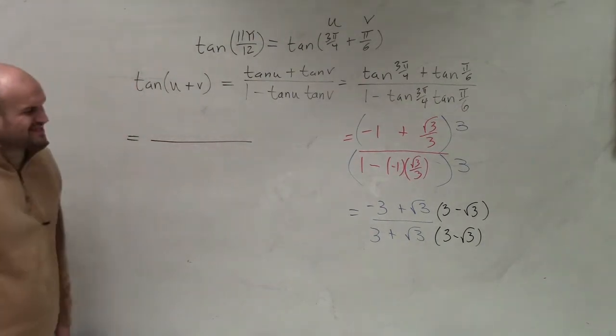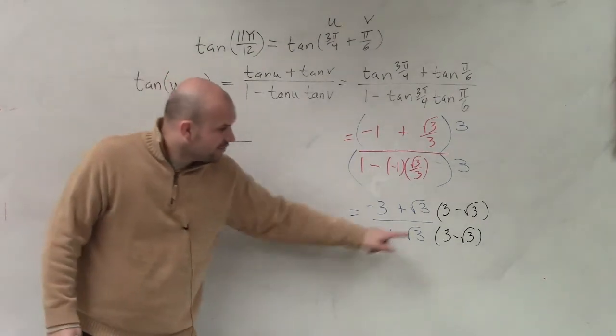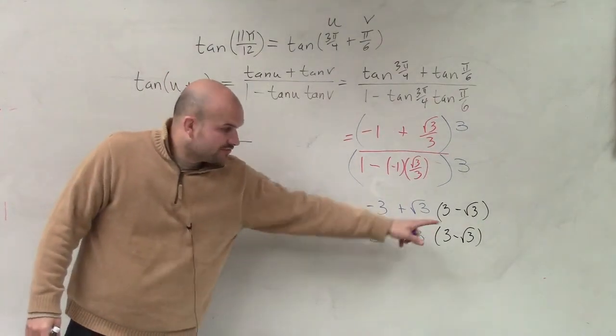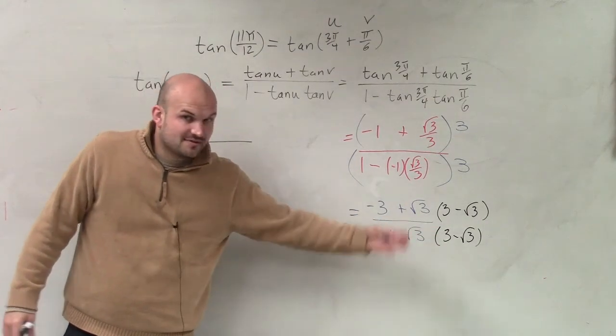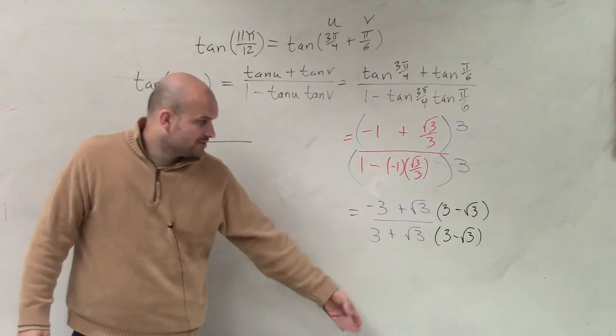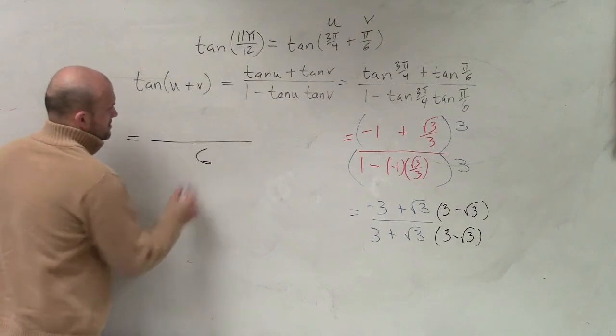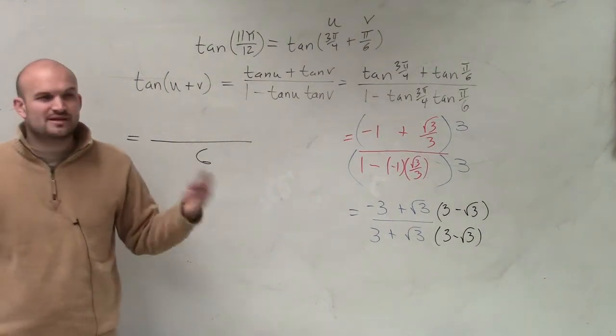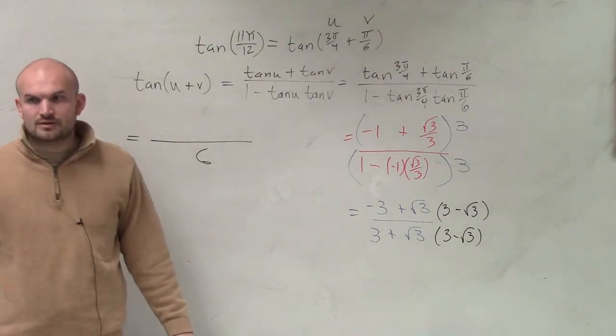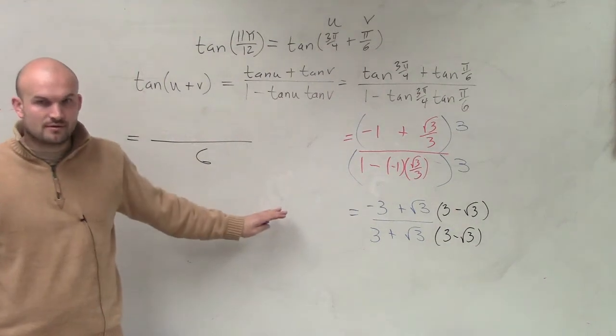I'm going to move everything over here. So now I rationalize the denominator. I like doing the denominator first because it's easier, because it's the difference of two squares. 3 times 3 is 9. Square root of 3 times negative square root of 3 is negative square root of 3 squared, which is going to be negative 3. 9 minus 3 is 6. Is everybody OK with that?